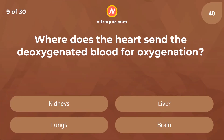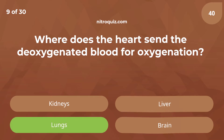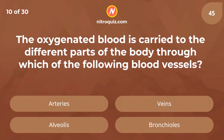Where does the heart send the deoxygenated blood for oxygenation? The oxygenated blood is carried to the different parts of the body through each of the following blood vessels.